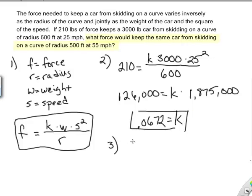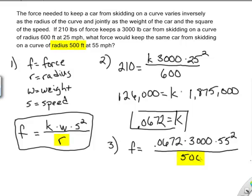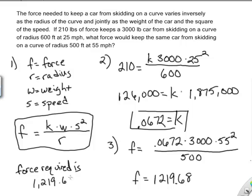And I go ahead and take it in step 3, and I plug in, and it asks me what force would keep the same car, so that means our weight is the same, from skidding on a curve of radius 500 feet at 55 miles an hour. So it's asking us for f, and now we plug back into our equation from step 1, we know our k times, we know our weight is 3,000, and now the car is going 55 miles an hour, so we say 55 squared, and we divide that by 500, our new radius. And so we got a little bit of calculator work to do, and we end up with f is equal to 1,219.68. And so the force required is 1,219.68 pounds.